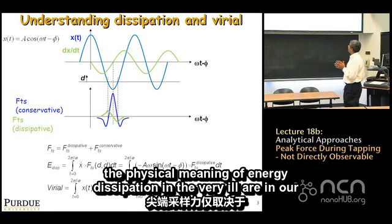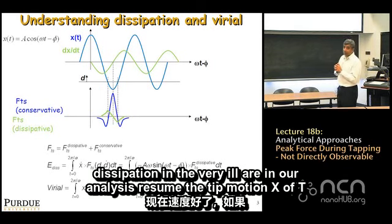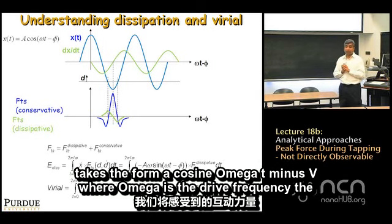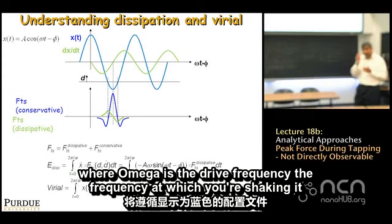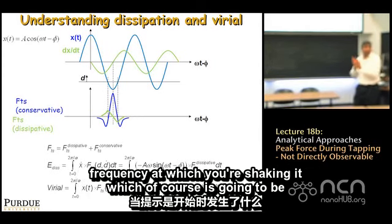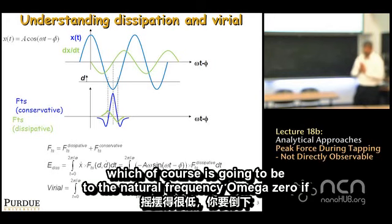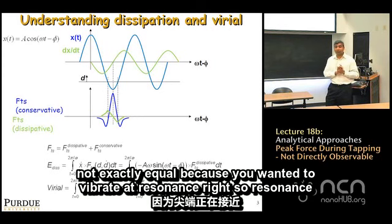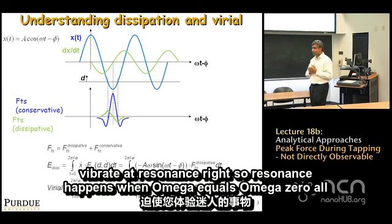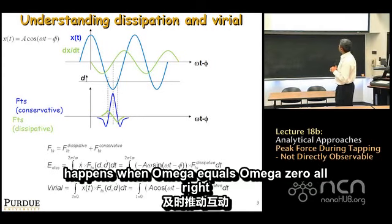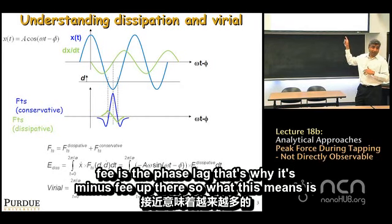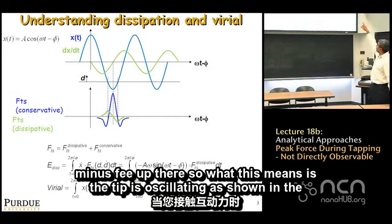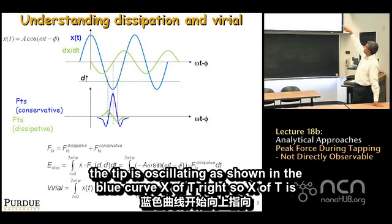In our analysis, we assume the tip motion x(t) takes the form A cosine(ωt − φ), where ω is the drive frequency close to the natural frequency ω₀, since you want the cantilever to vibrate at resonance. φ is the phase lag. So the tip is oscillating as shown by the blue curve x(t) = A cos(ωt − φ).